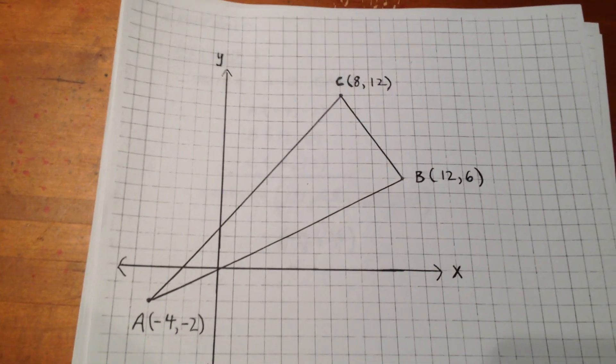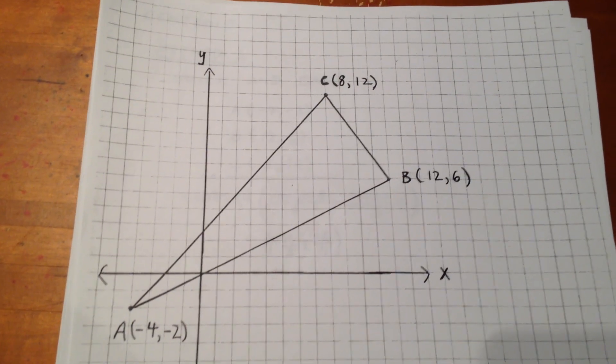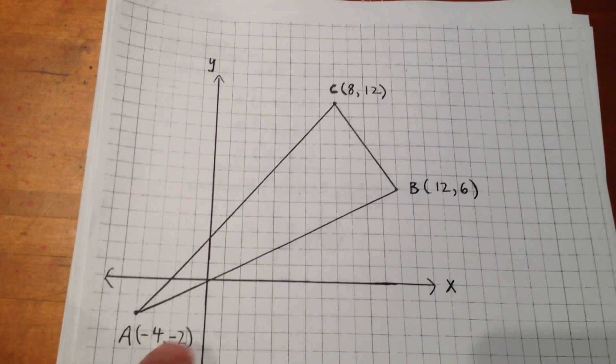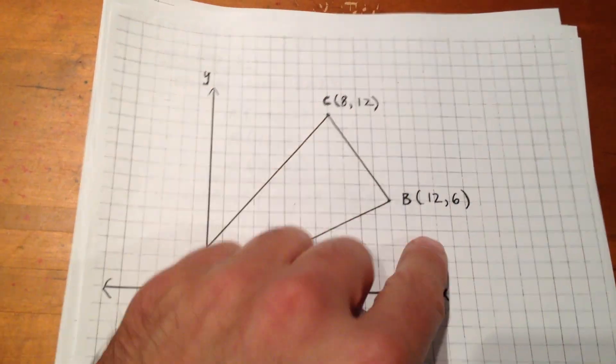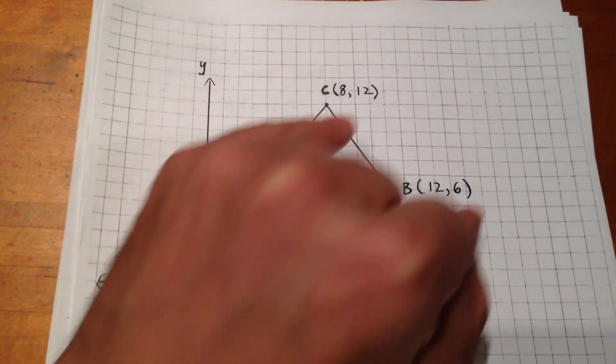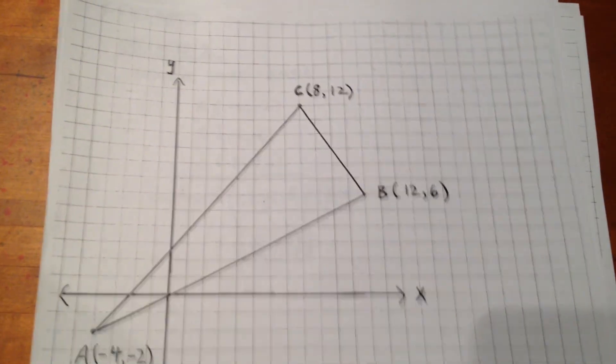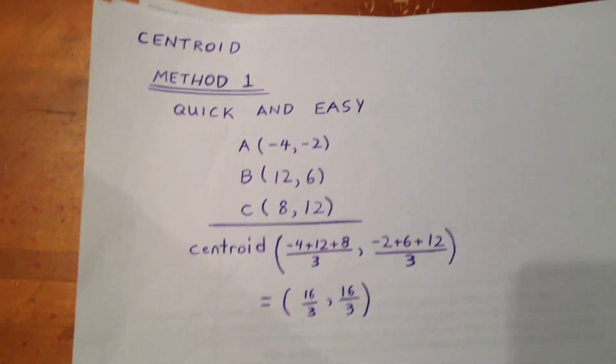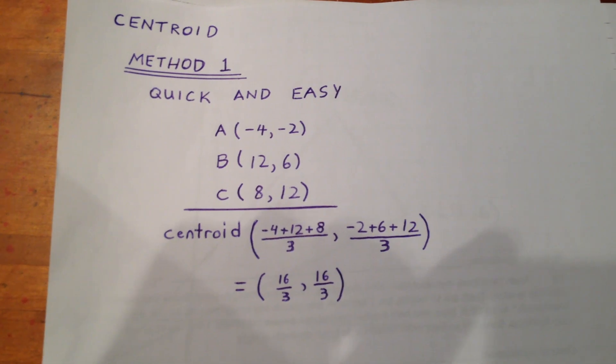There's the triangle. Now, there's a really quick and easy way to do this. The quick and easy way to do this is to simply add up all the x coordinates and divide by 3, then add up all the y coordinates and divide by 3.